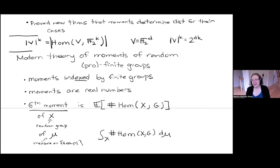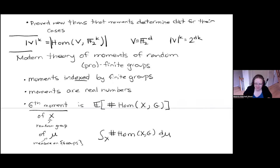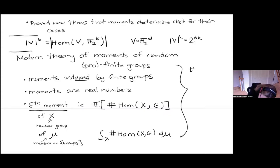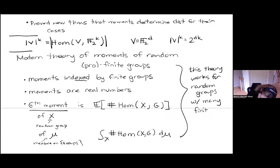This theory is not useful for groups without many finite quotients, and I hope people with interest in that case will be able to come up with some other theory. For our examples: the number theory groups are literally finite groups or profinite groups. On the topology side, those groups almost always inject into their profinite completions, so you can really see the whole group through their finite quotients — maps to finite groups. This theory works for distributions on groups with many finite quotients or maps to finite groups.